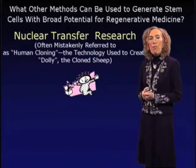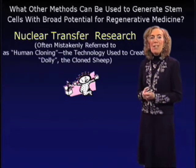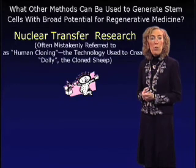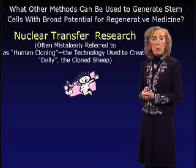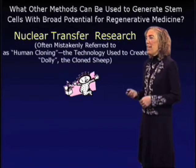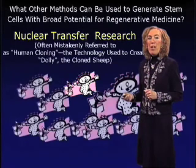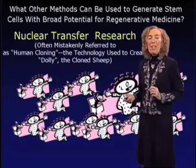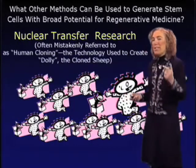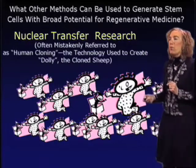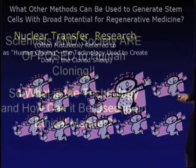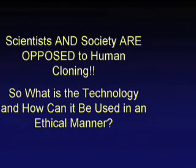Nuclear transfer is the technology often mistakenly referred to as human cloning. It is the technology used to create Dolly, the first cloned animal, which happened to be a sheep made in England some years back. This technology has the capacity to generate more and more perfectly genetically identical animals. Let me point out from the very beginning that scientists and society are opposed to human cloning. How can we use this for regenerative medicine in an ethical manner?